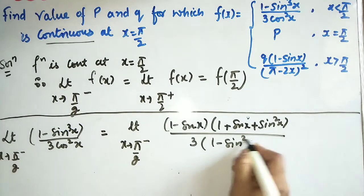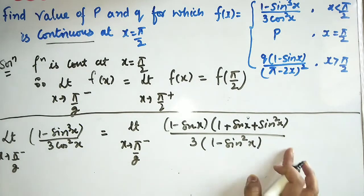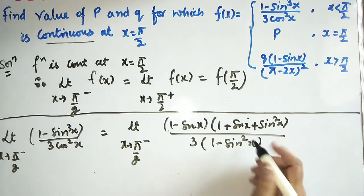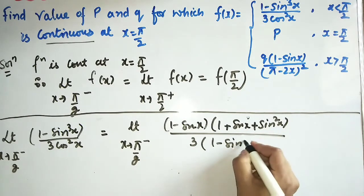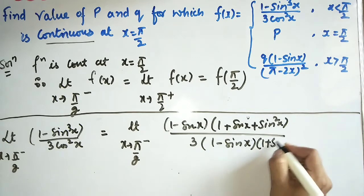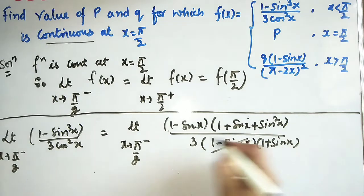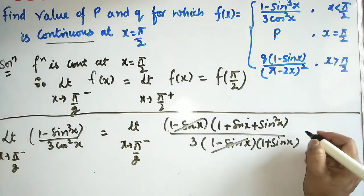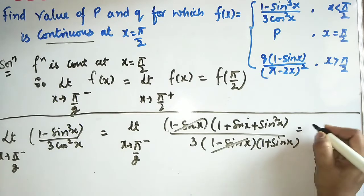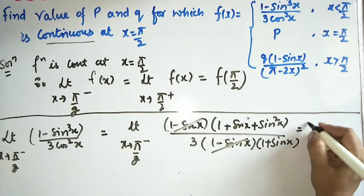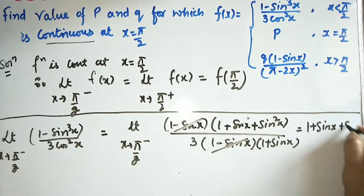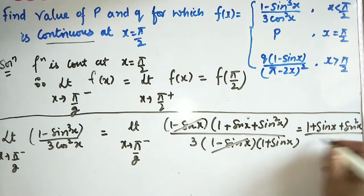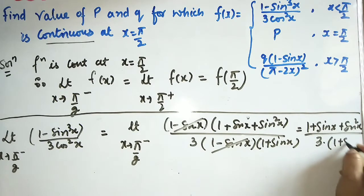The denominator cos²x can be written as (1 - sin²x) = (1 - sinx)(1 + sinx). So the (1 - sinx) terms cancel, and we are left with (1 + sinx + sin²x) / (3(1 + sinx)).